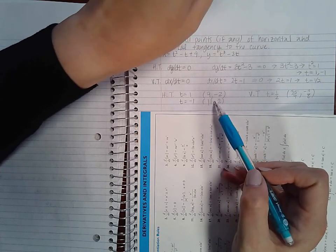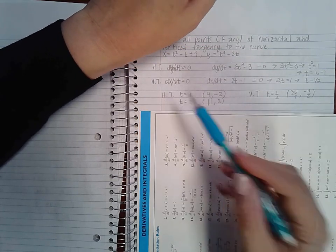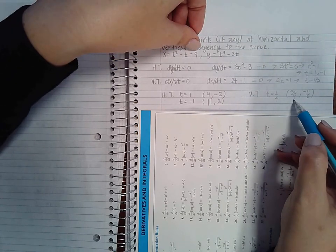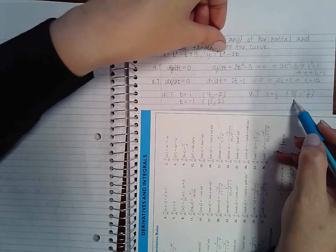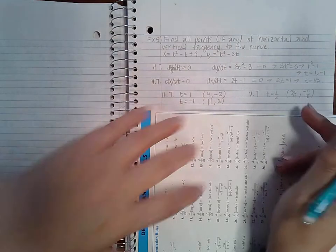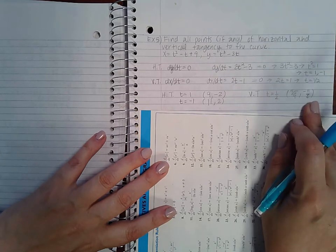So these are the two points of horizontal tangency. For t equal to 1 half, if I plug it in I get 35 over 4 for x and negative 11 over 8 for y. So this is the point of vertical tangency.